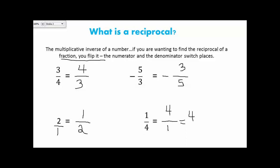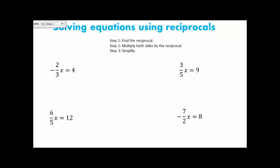Now we're going to use our reciprocals when we're solving equations that have fractions as coefficients. Let's look at this first equation. We've got some steps: find the reciprocal, multiply both sides by the reciprocal, and simplify. I go, okay, negative 2 thirds. Well, my reciprocal would be negative 3 over 2. So I'm going to multiply both sides of my equation by negative 3 over 2.